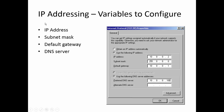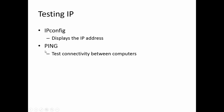When we configure TCP/IP, there are four key variables to configure for each host: IP address, subnet mask, default gateway, and DNS server. We can configure them manually or using DHCP. To test TCP/IP, we can use the ipconfig command, which displays the IP address, or the ping command, which tests connectivity between computers.